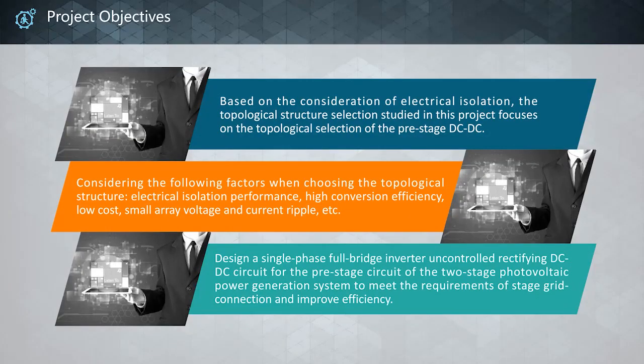For this project we have three objectives. First, based on the consideration of electrical isolation, the topology selection study focuses on the pre-stage DC-DC. We consider the following factors when choosing the topology: electrical isolation performance, high conversion efficiency, low cost, small voltage and current ripple. Finally, we designed a single-phase full-bridge inverter and controlled DC-DC circuit for the pre-stage of the two-stage PV power generation system to meet grid connection requirements and improve efficiency.